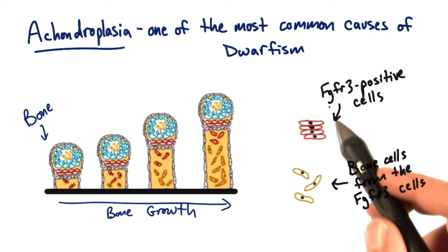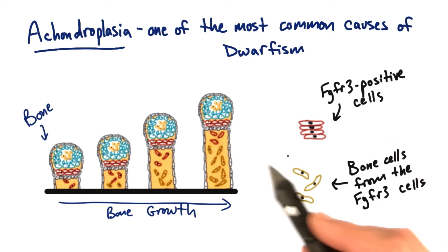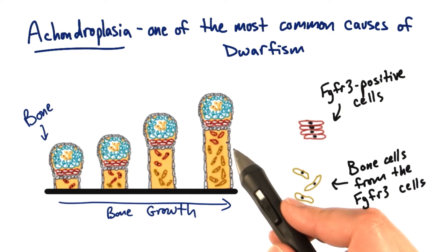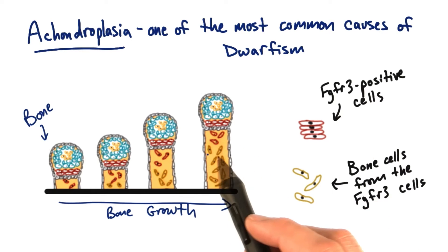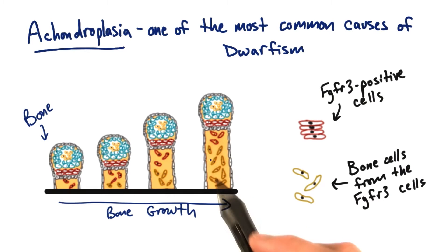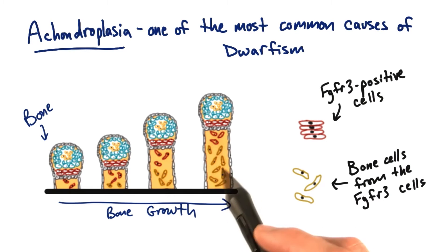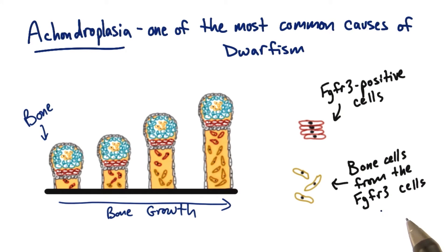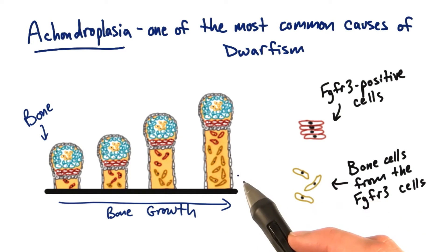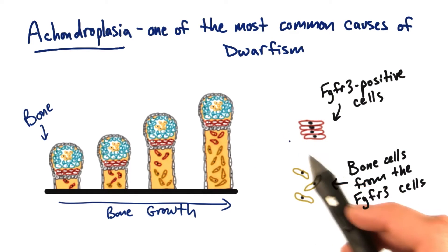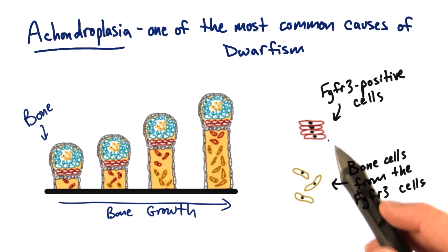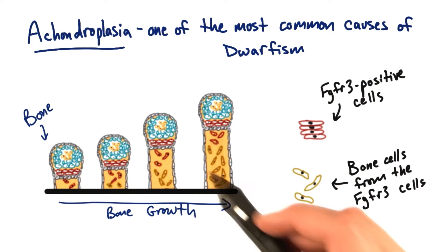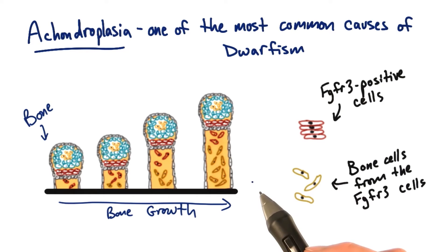As these FGFR3-positive cells grow and divide, they become the cells that are part of the physical substance of the long bone itself. So essentially, these FGFR3-positive cells grow and divide into more cells, and that's how the bone gets longer.